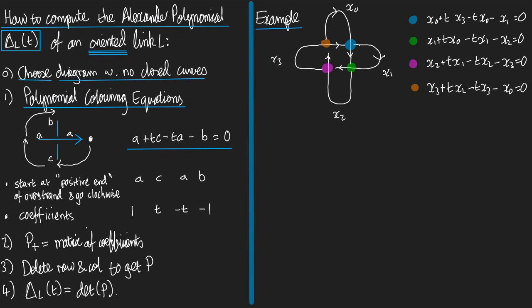Now we go on to step number two, which is that we form the matrix of coefficients P+, like we did with the coloring matrix, to obtain the coloring matrix plus, the thing we called A+ before. So let's do that. We want to write down P+, and it's going to be a matrix whose rows are the crossings and its columns are the arcs: x0, x1, x2, x3.